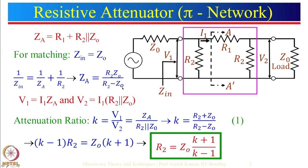We also need to find the voltage ratio. V1 is I1 multiplied by Z_a, which is R1 plus R2 in parallel with Z0. V2 is that same current I1 multiplied by the parallel combination of R2 in parallel with Z0. Now if we take the ratio V1/V2, which we are defining as K (the attenuation ratio), the currents I1 cancel, and we get Z_a divided by the quantity R2 in parallel with Z0.